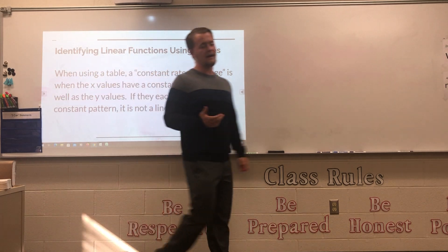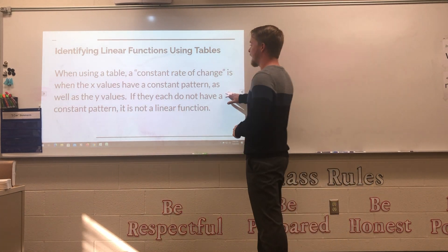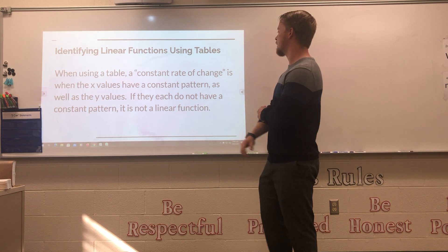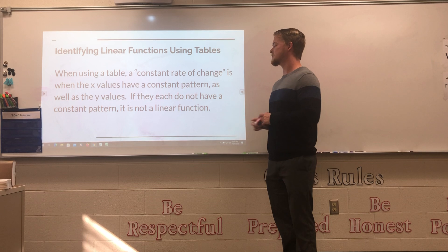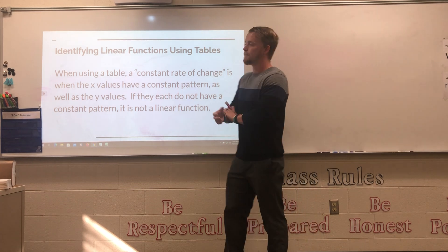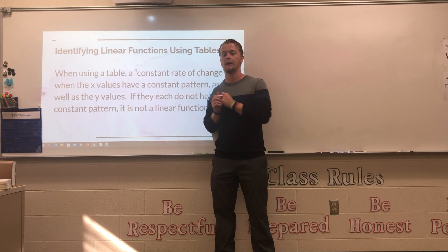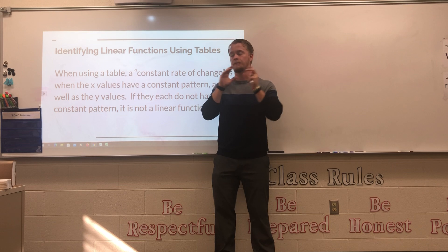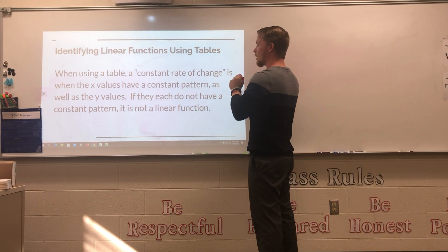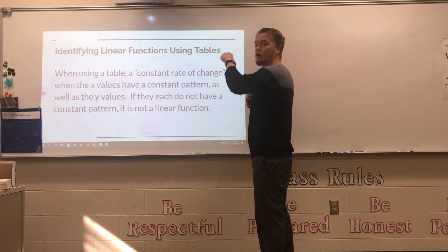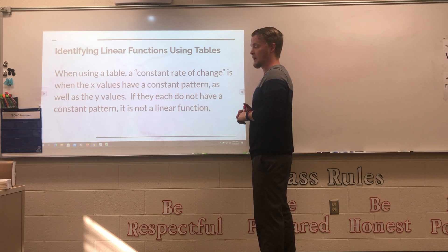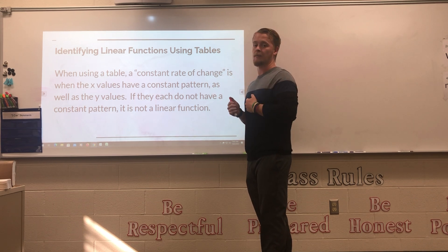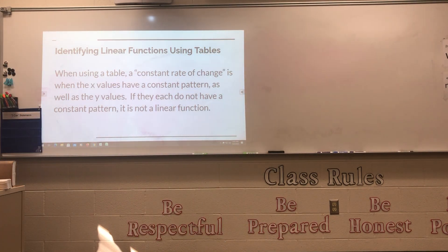Sometimes they'll give you tables and ask you to determine if it's a linear function. When using a table, a constant rate of change means the x-values have a constant pattern and the y-values also have a constant pattern. Whatever is happening with x values has to happen the whole time, and same for y values. The y values don't have to match the x pattern — for example, x could go up by two while y goes down by five — but all y values must go down by five consistently.